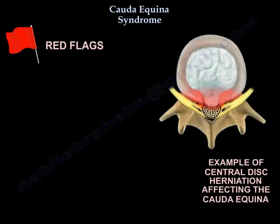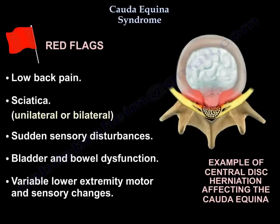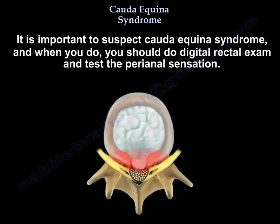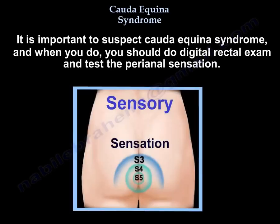The red flags that tell you that you have Cauda Equina syndrome are: low back pain, sciatica unilateral or bilateral, sudden sensory disturbance, bladder and bowel dysfunction, and variable lower extremity motor and sensory changes. Early diagnosis is challenging because the initial signs and symptoms are usually subtle. It is important to suspect Cauda Equina syndrome, and when you do, you should perform a digital rectal exam and test the perianal sensation.